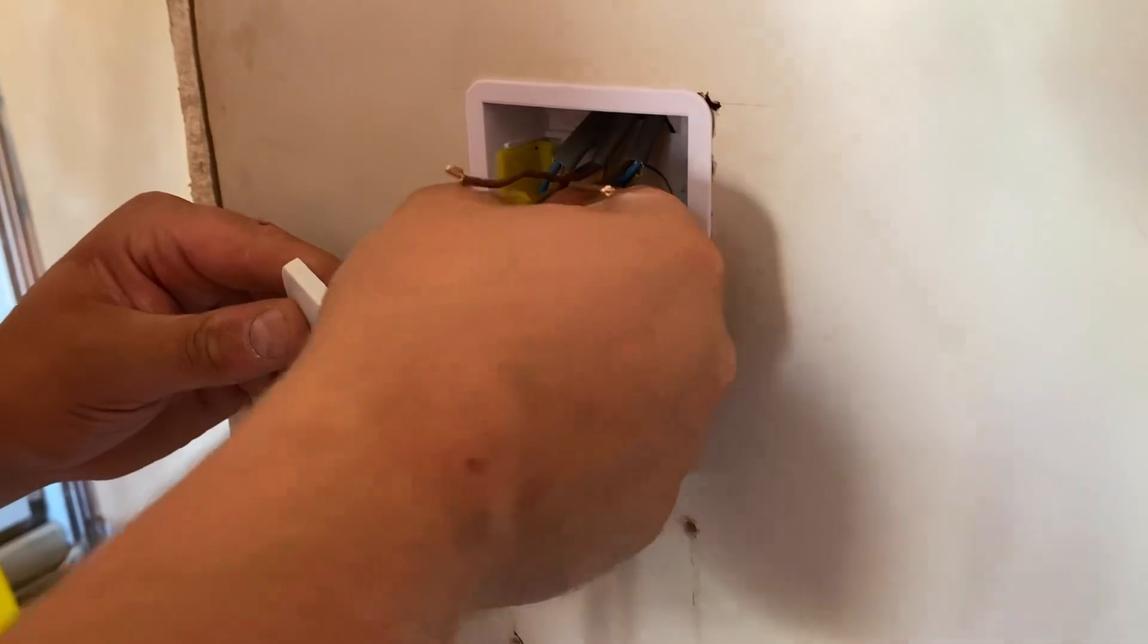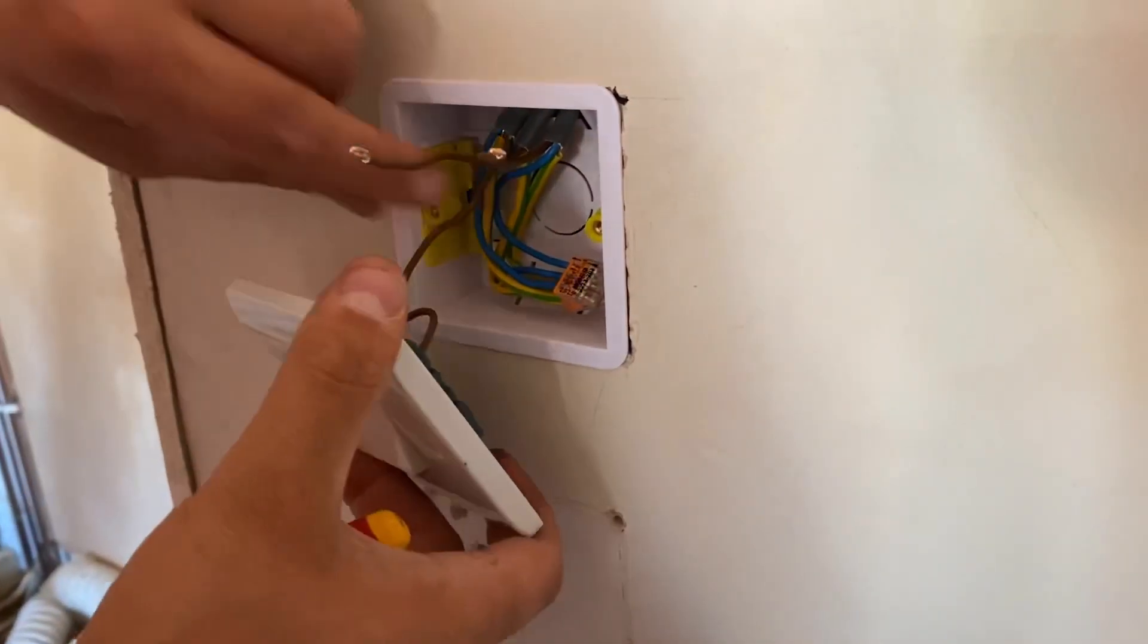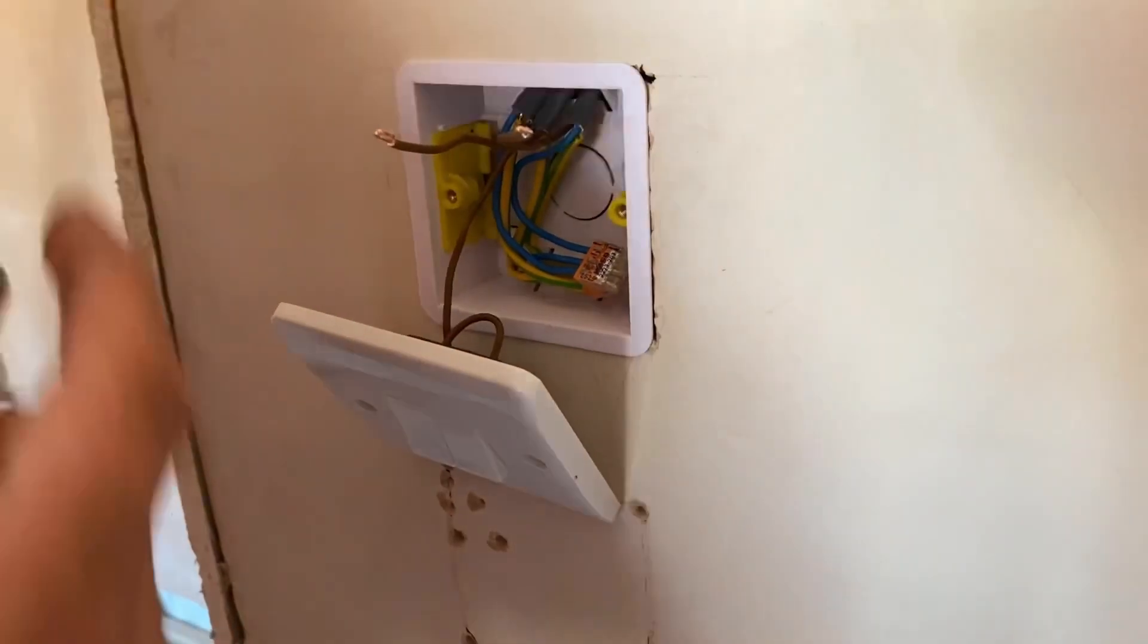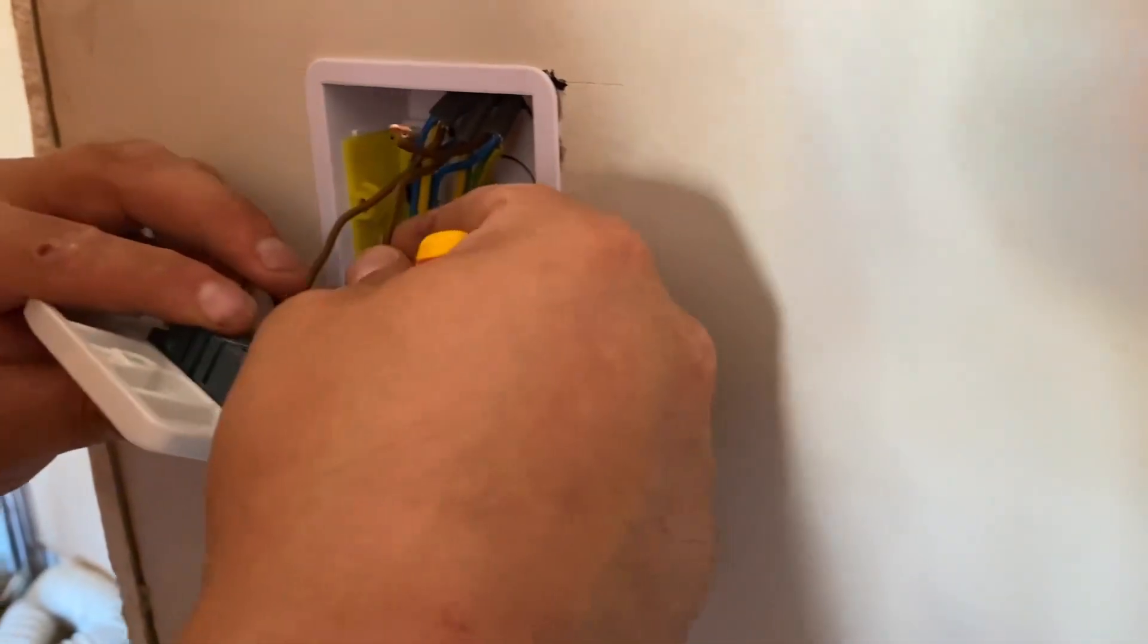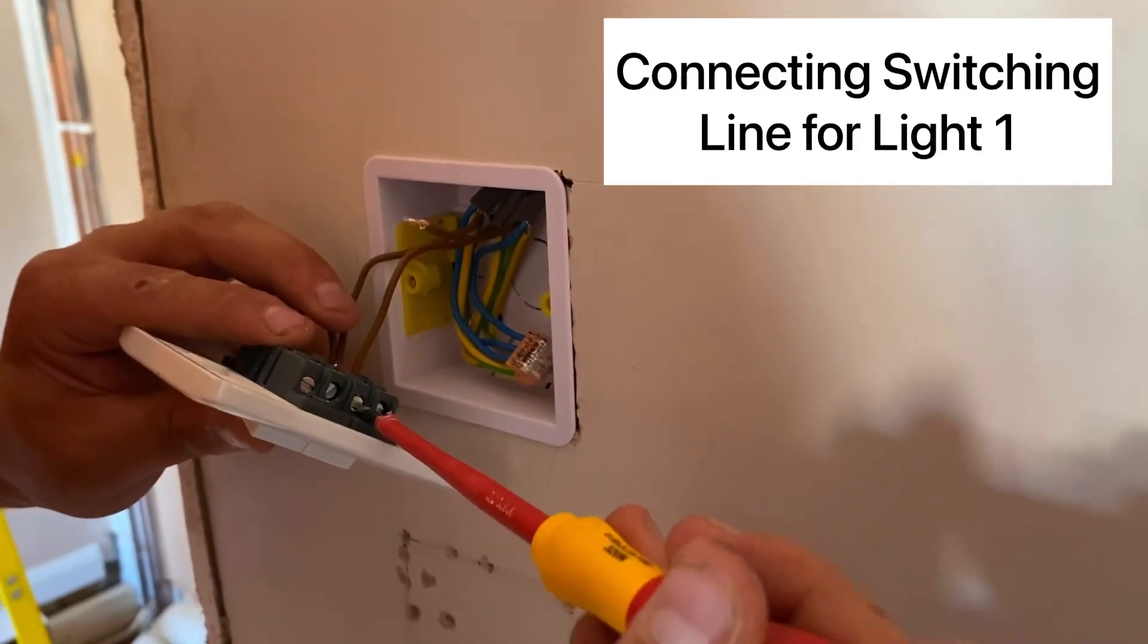Another benefit really as well: if we wanted to introduce smart switching into the property, it could be that we actually need a neutral. Now we actually have that at the switch, so we can utilize the neutral for smart switching.